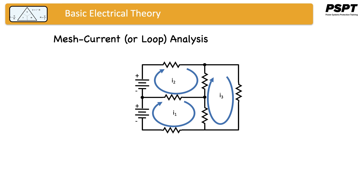If the current flowing in I1 looks like that, then we're going to get a voltage drop across the bottom resistor, as indicated, plus to minus. The resistor at the top of the three meshes, because of the current I2 flowing in that direction, will set up a voltage drop from positive to negative, as indicated in the diagram. And in loop three, the outermost resistor, because of the current I3, will have a voltage drop plus to minus, as indicated in the diagram.